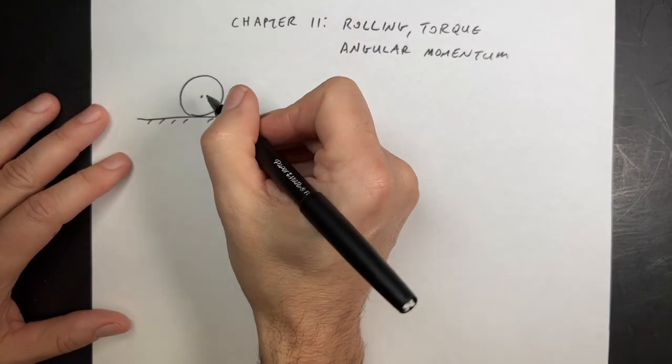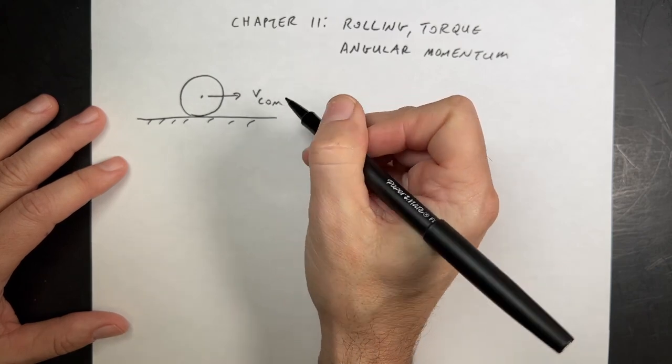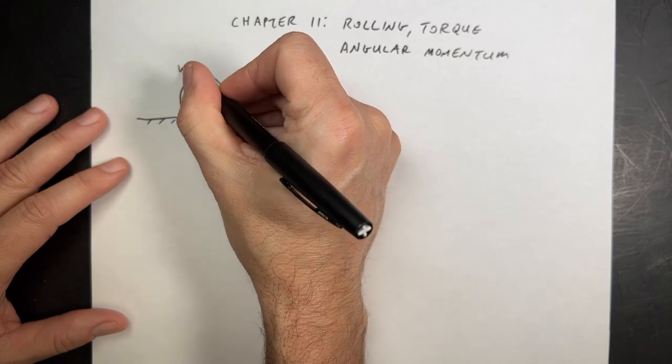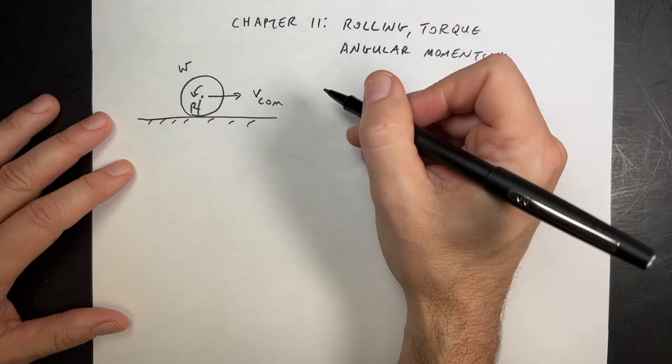So if an object is rolling without slipping, they call this velocity of the center mass vcom, just as a scalar. And then there is this omega, and then there's the radius r.